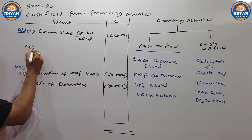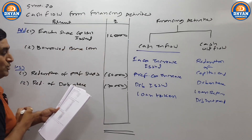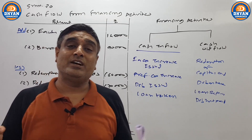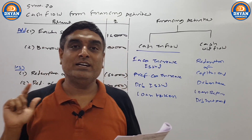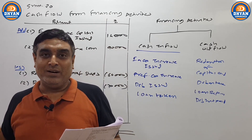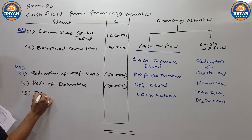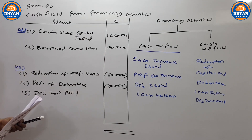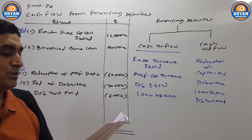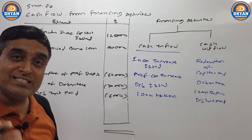Next point — debenture interest paid. Generally bachcho ko lagta hai interest payment expense hai, operating mein aayega. But dekhna yeh nahi hai — debenture ka interest, debenture hamesha financing activities hai. Agar capital se related koi bhi point ho, toh woh finance mein aayega. Debenture interest payment kiya, cash goes out — that is financing activities outflow. Debenture interest paid, I think 6,000. Uske baad — dividend paid. Dividend bhi share capital ke upar diya jaata hai — to yeh bhi financing activities related point hai. Cash outflow hoga — dividend paid, value I think 8,000.